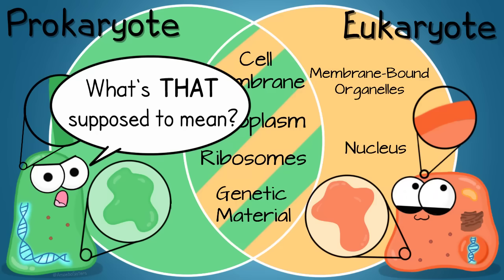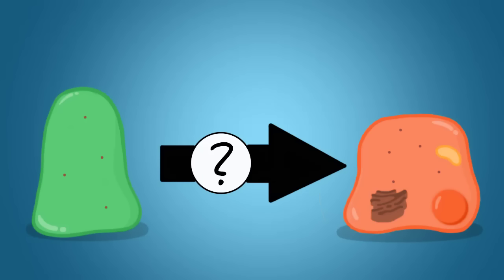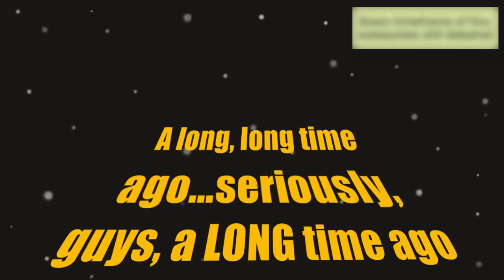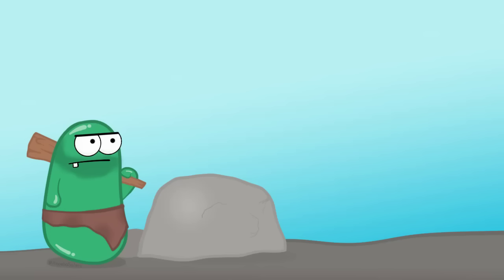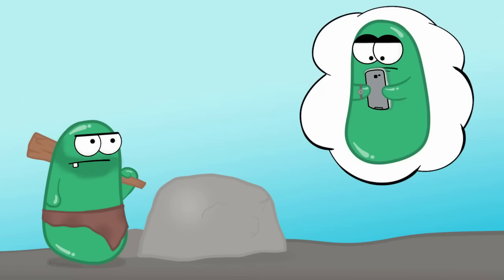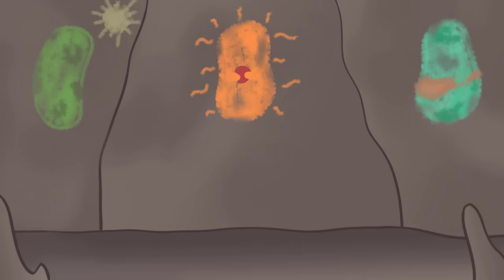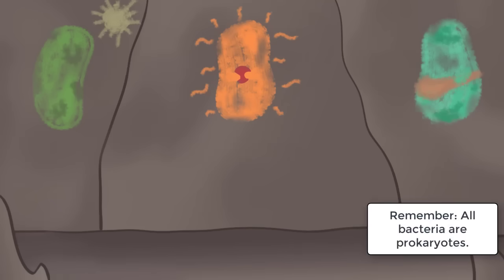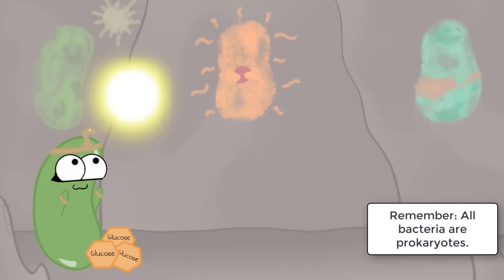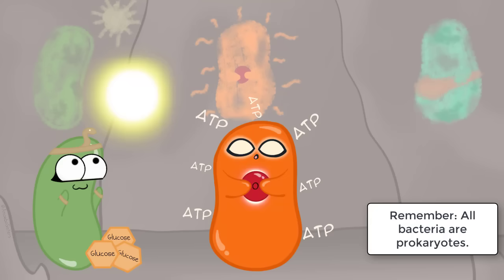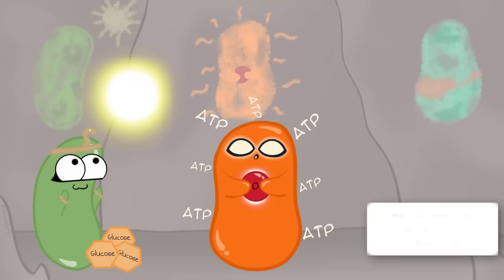So what explanation does the endosymbiotic theory provide for how eukaryote cells could have evolved from prokaryote cells? A long, long time ago—seriously a long time, over 2 billion years ago—there were prokaryotes much like there are today. Just as there are in many organisms, there was variety in prokaryotes. Some of the prokaryotes had photosynthetic abilities, which means they could make their own food using sunlight energy—those were the photosynthetic bacteria. Some prokaryotes were bacteria that had the ability to use oxygen to produce ATP energy.